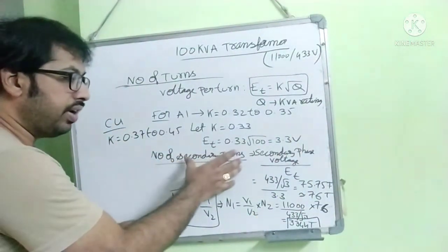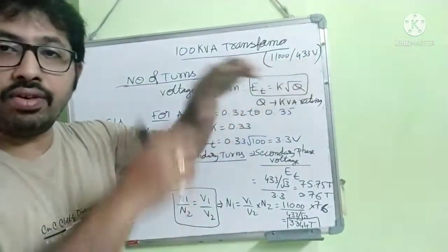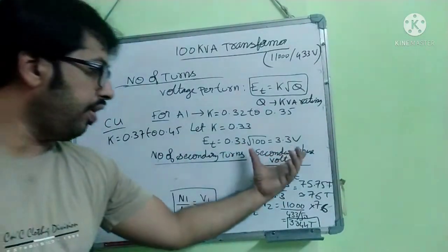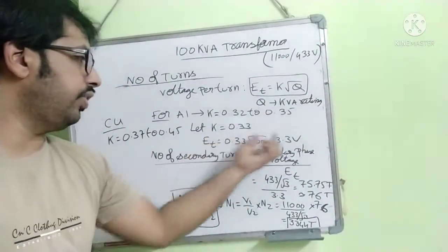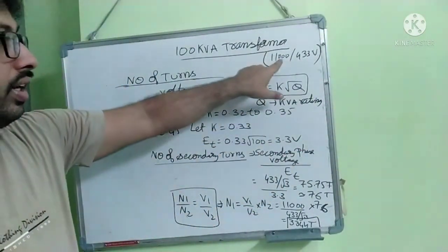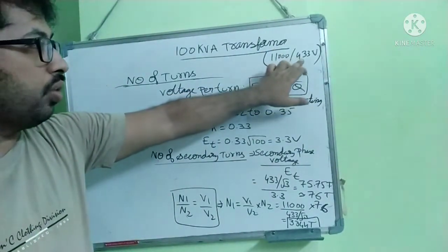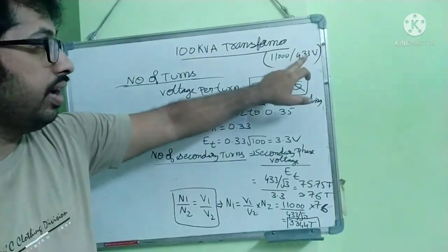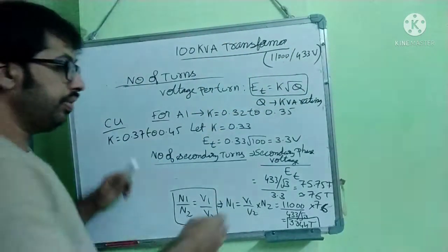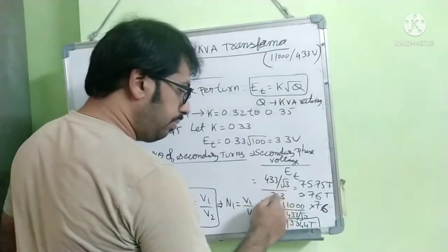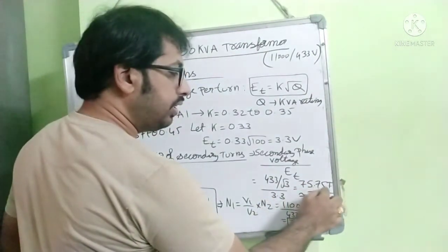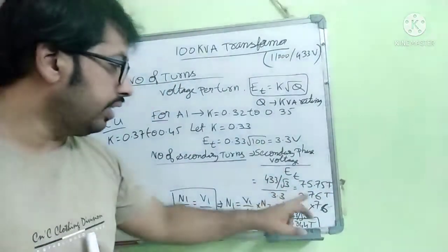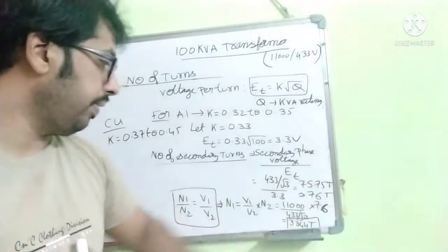Now we will find the number of secondary turns. Secondary turns means LV winding. Secondary turns is secondary phase voltage by the voltage per turn which we got. This is actually delta star. So how to calculate the phase voltage? 433 by root 3, that is the phase voltage. The one which is given is the line voltage. So secondary voltage 433 by root 3 by EMF per turn is 3.3. We got 75.75 turns, which we take approximately 76 turns. So LV winding has 76 turns.